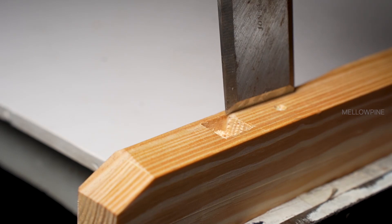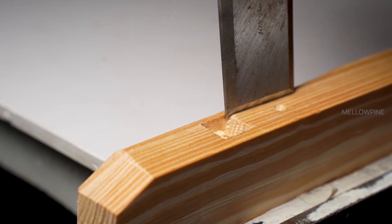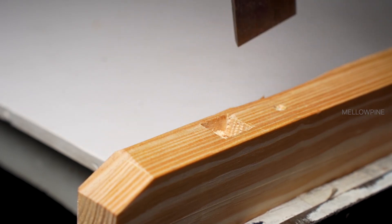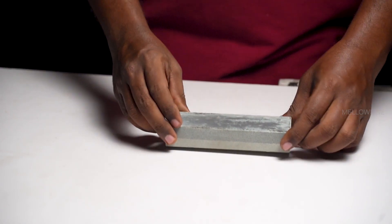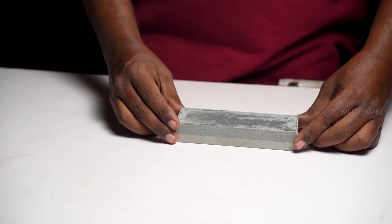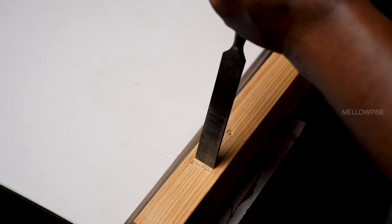Keep your chisel sharp for optimal performance. Regularly sharpen the blade using a sharpening stone or honing guide. A sharp chisel provides cleaner cuts and reduces the force required to make each cut.